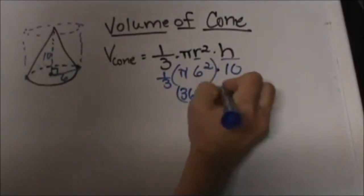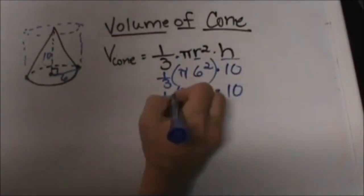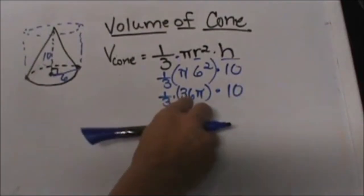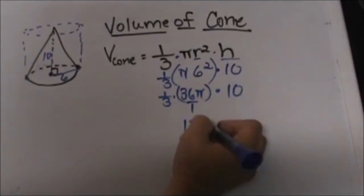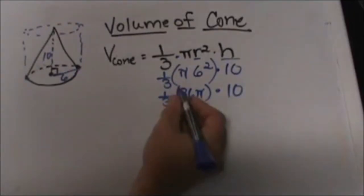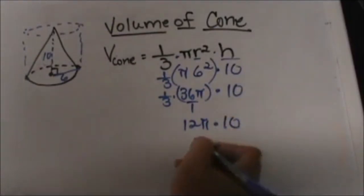And then times 10 I will bring it down, times one third I will bring that down. Now what is one third of 36, so stick this 6 over 1 and multiply so that becomes 12 pi because it would be 36 over 3 which is 12 times 10.